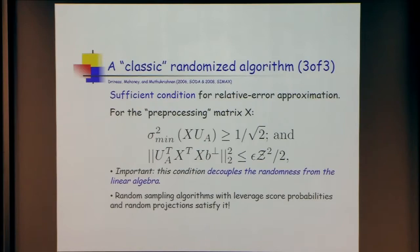These conditions are important because they decouple the randomness from the linear algebra — there's no deterministic statement about randomness here. If x can be constructed with some randomized mechanism, great. If not, do something deterministic. If you do a deterministic thing and can check it a posteriori, you may have a better result in practice. In particular, random sampling with leverage score probabilities and random projection algorithms will satisfy those conditions.